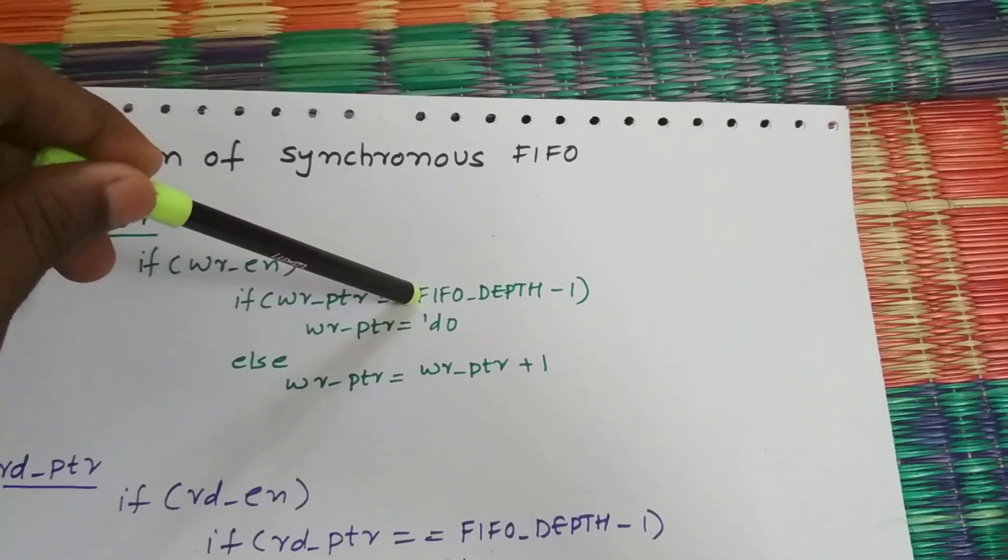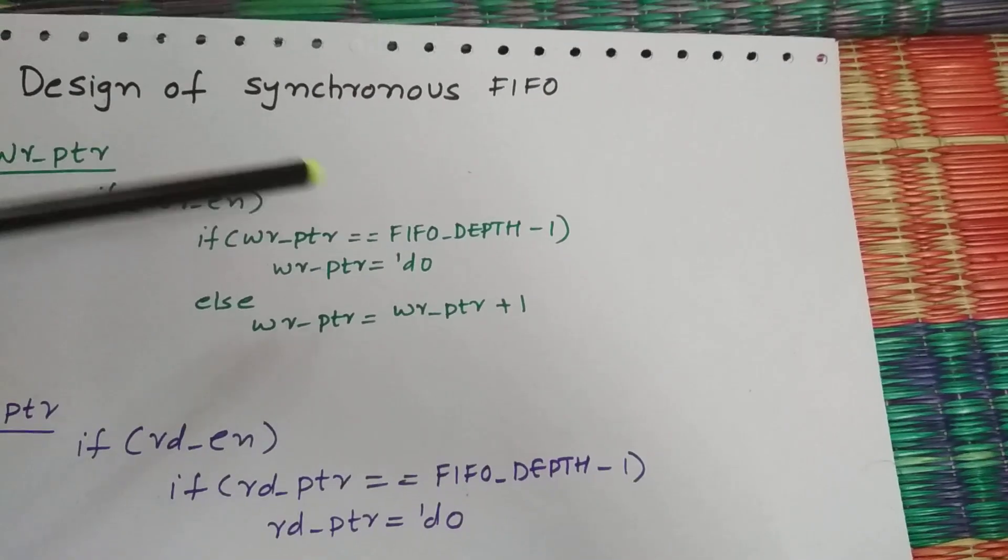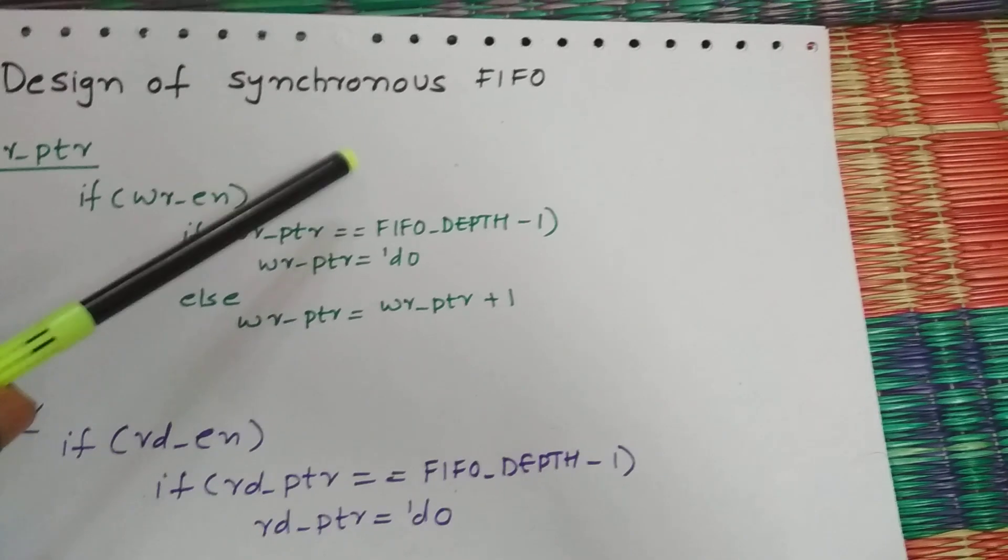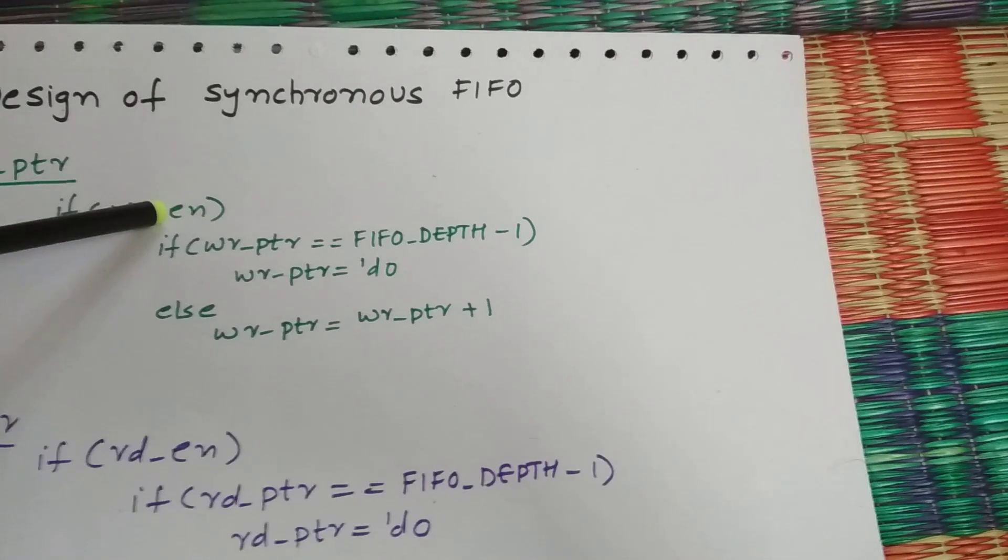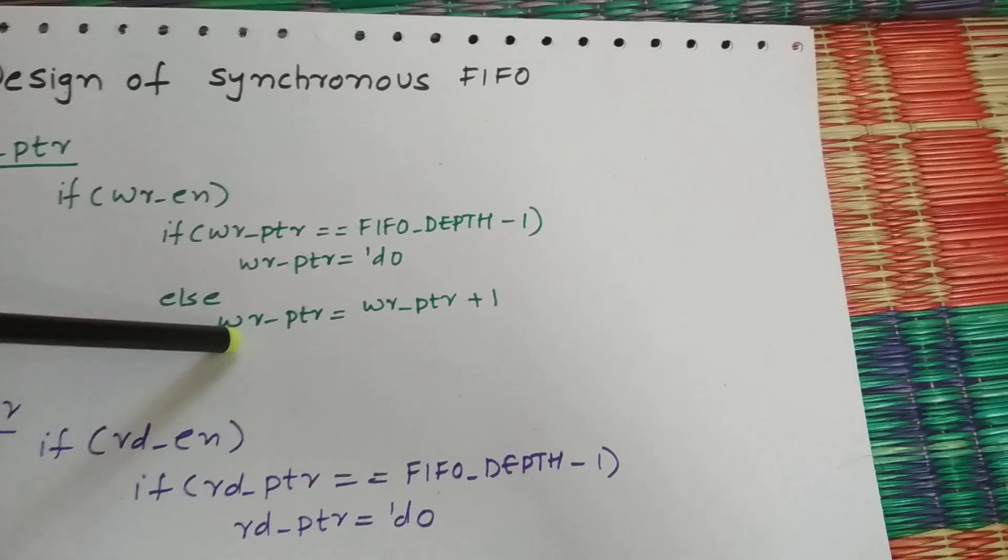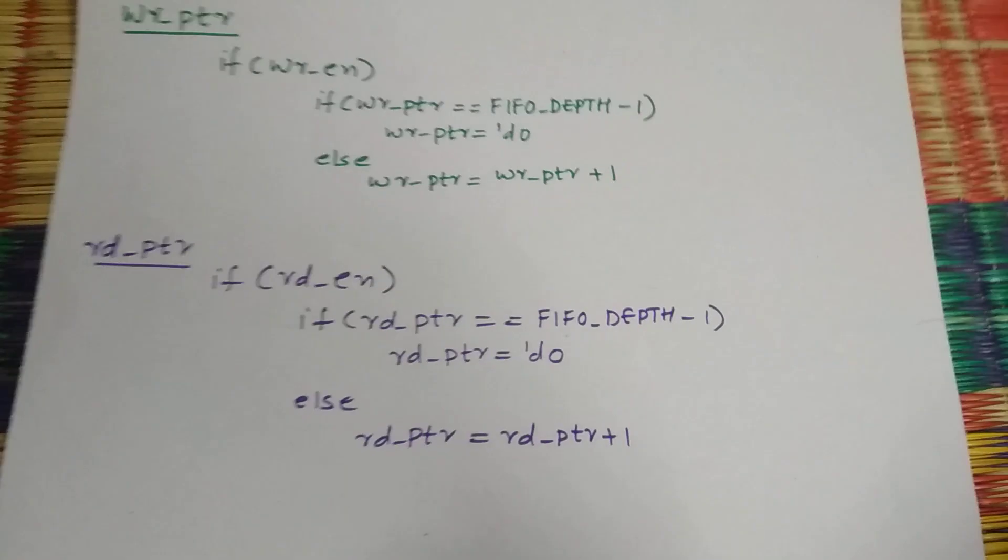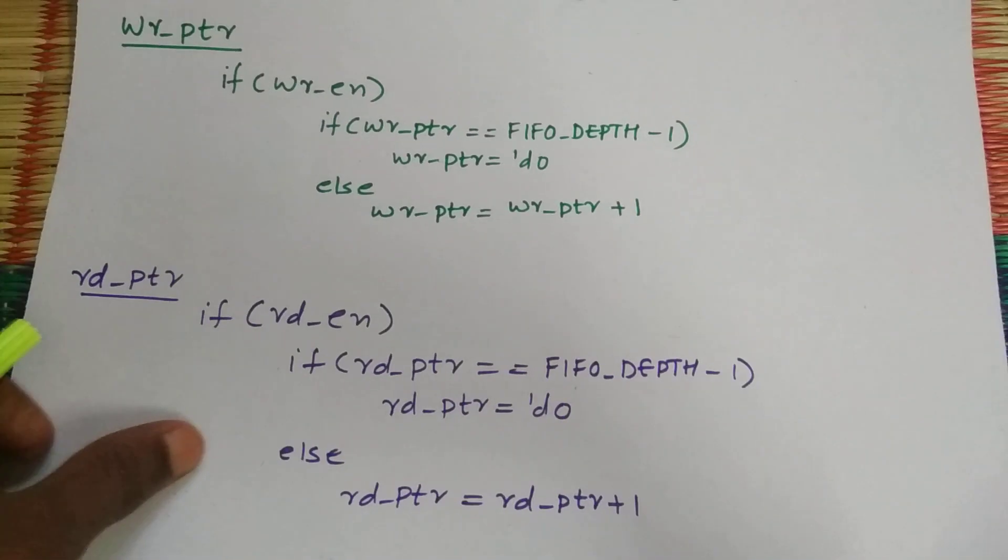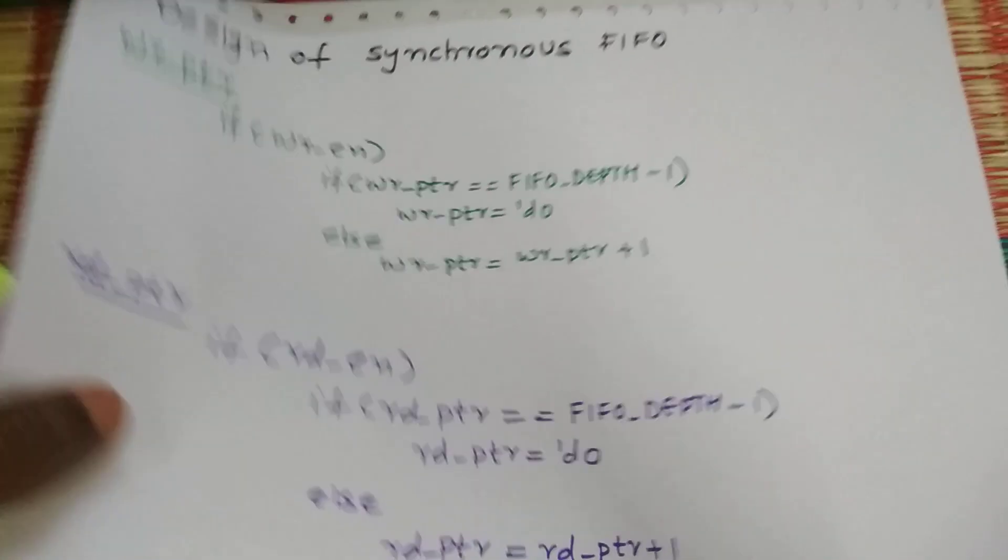I have chosen at seven, and that's your wish - you can choose six or five, that's what you want. Whenever write enable is high and it's not full or almost full, then I'll increment the pointer. Similar case with the read pointer. I'm going to take a case statement for it.